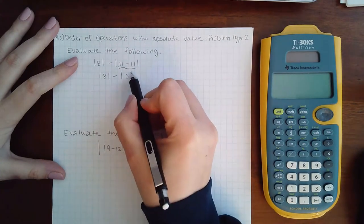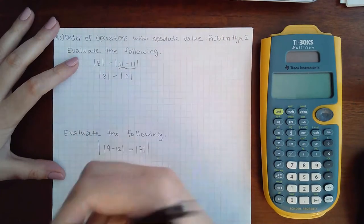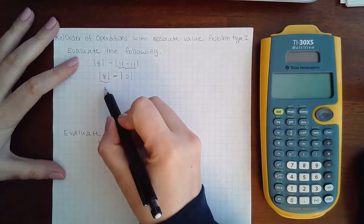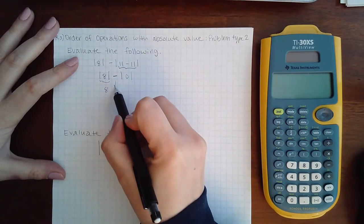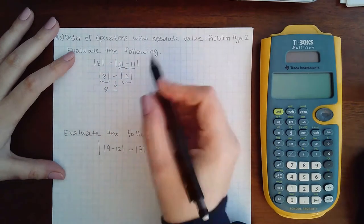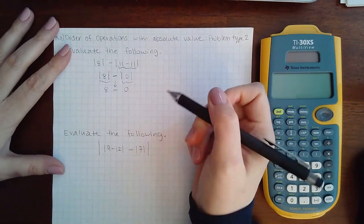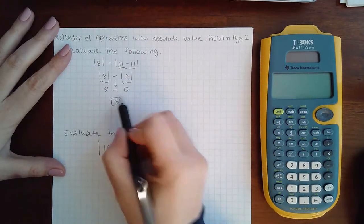11 minus 11 is 0. Then we need to evaluate. If I evaluate the absolute value of 8, it's 8. Bring down the minus. Evaluate the absolute value of 0, which is 0. And then the last step left to do is to subtract.